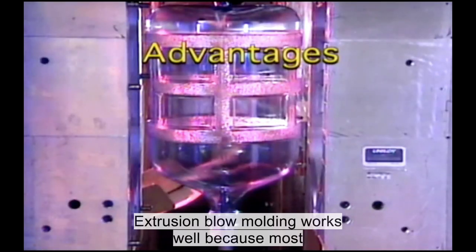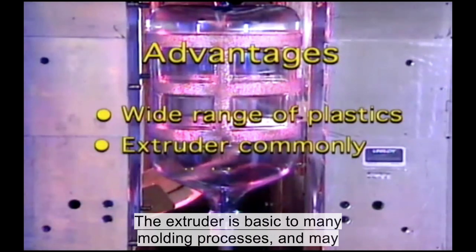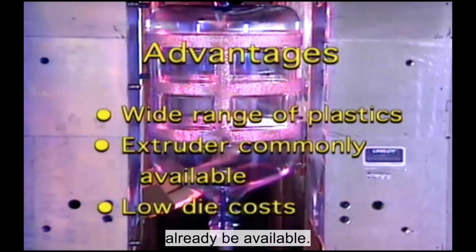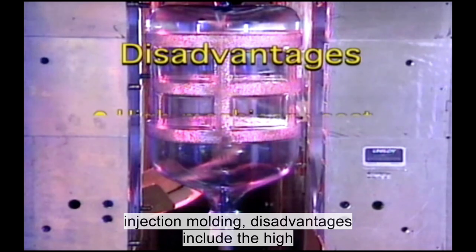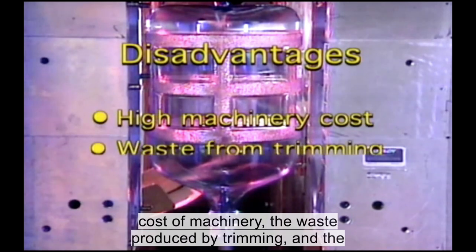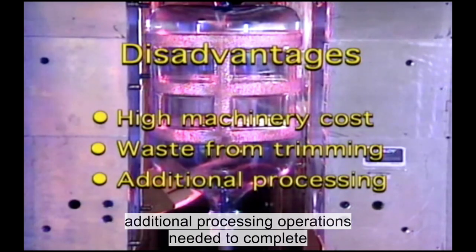Extrusion blow molding works well because most thermoplastics can be used as a material. The extruder is basic to many molding processes and may already be available. Although the cost of the die is lower than those for injection molding, disadvantages include the high cost of machinery, the waste produced by trimming, and the additional processing operations needed to complete the manufacturing.